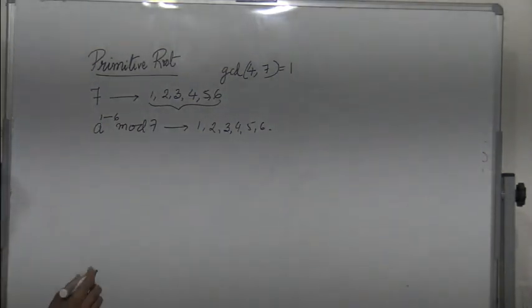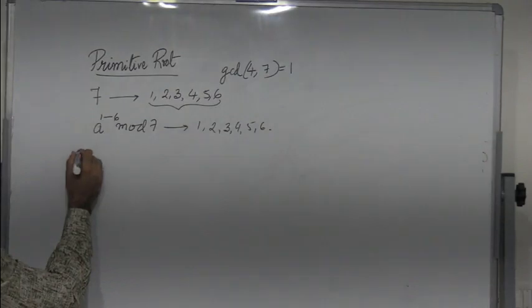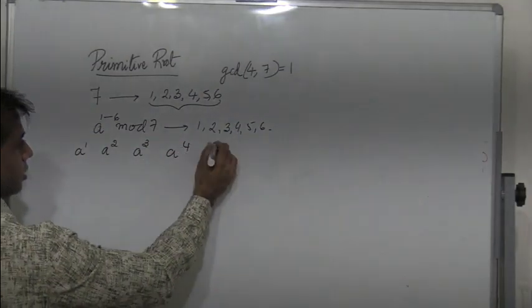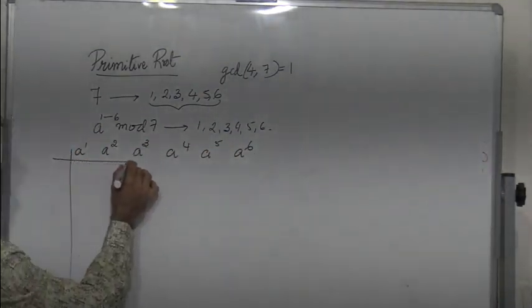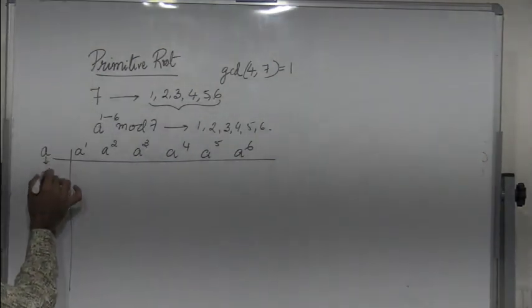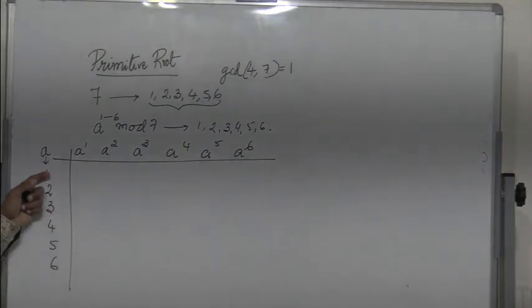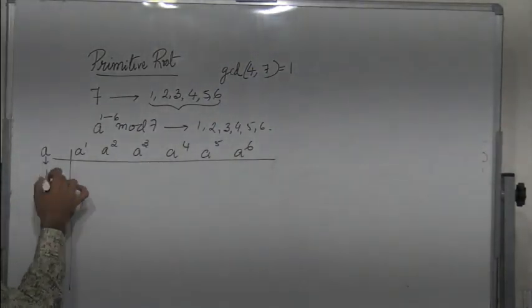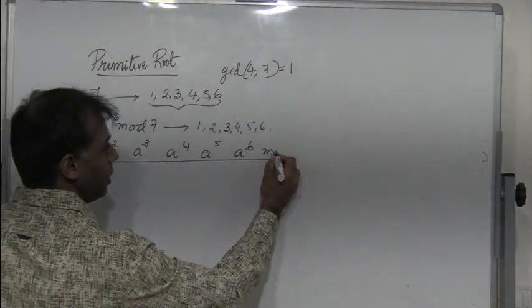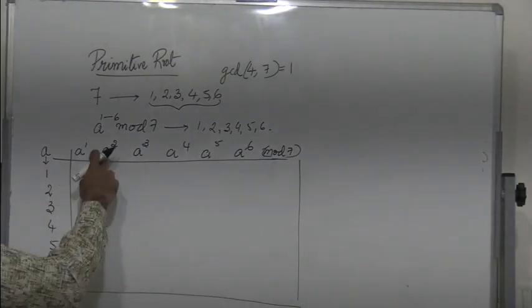Let's take an example and write a table so that it becomes easier. The number a can be 1, 2, 3, 4, 5, or 6 — all of these are relatively prime to 7. We take a to the power 1, a to the power 2, a to the power 3, and so on, all calculated in mod 7. It's important to calculate the powers in mod 7.